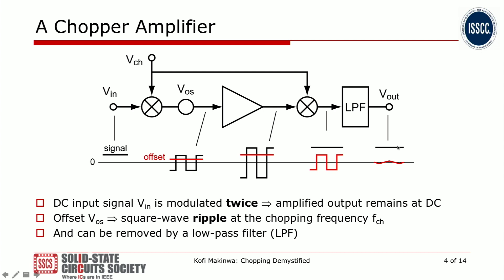The square wave gets amplified, becoming a larger square wave, and then it hits the second modulator and gets demodulated back to DC. The DC signal goes through this low-pass filter and appears as a DC signal at output. So from the point of view of the input signal, this circuit behaves like an amplifier — you put in a small DC signal and you get a larger DC signal at output. But the amplifier's offset is only going to be modulated once. So the red offset becomes bigger at the output of the amplifier, gets turned into a square wave by the second modulator, and that square wave signal will be filtered out by the low-pass filter.